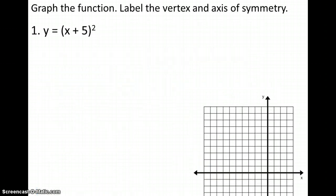So let's try one of these. The first one says to graph the equation, they want us to label the vertex and the axis of symmetry. Even if they don't ask you, be in the habit of labeling your vertex and axis of symmetry. So for this one, remember that your form that you're looking for is y equals a times x minus h squared plus k.